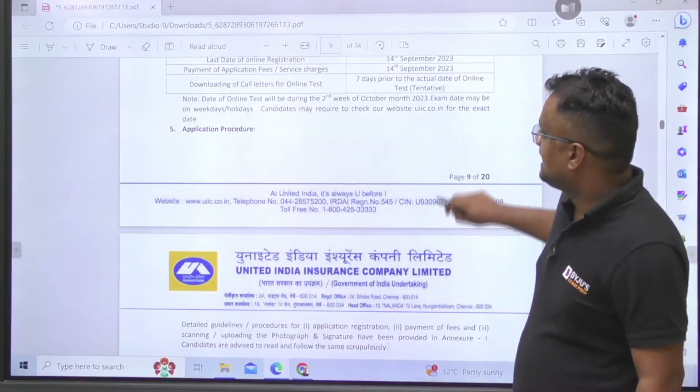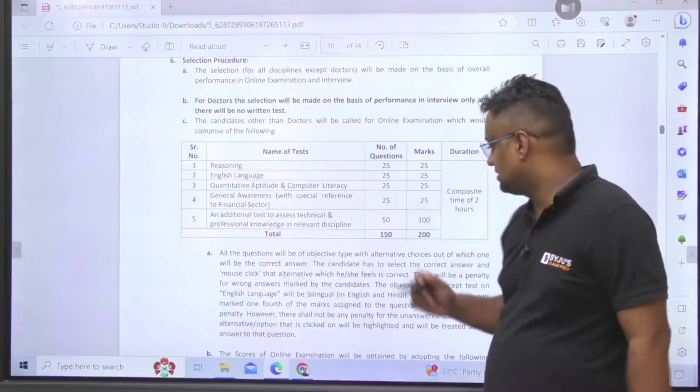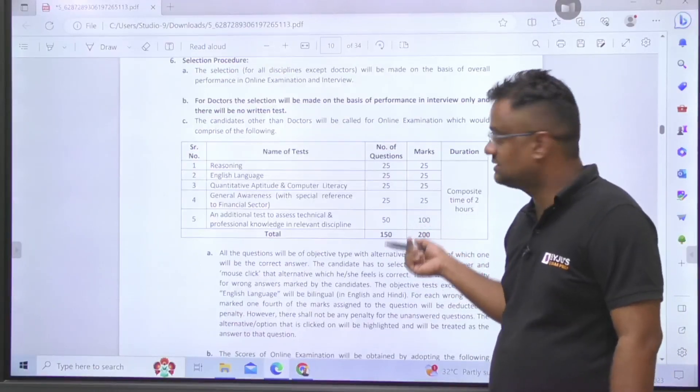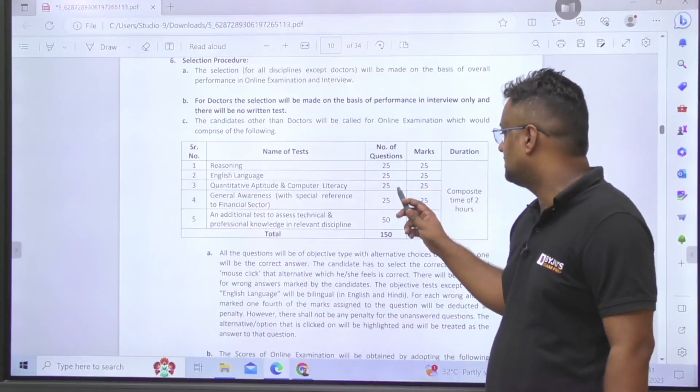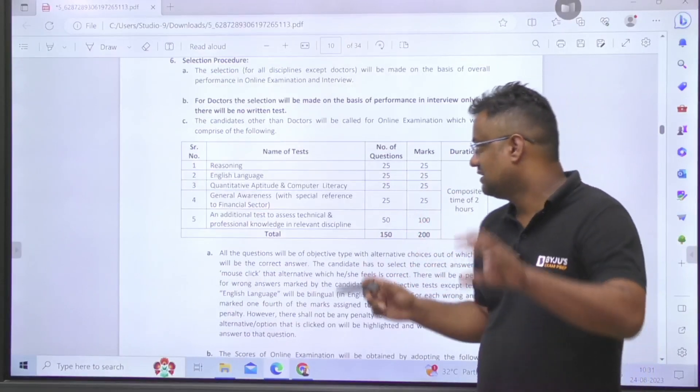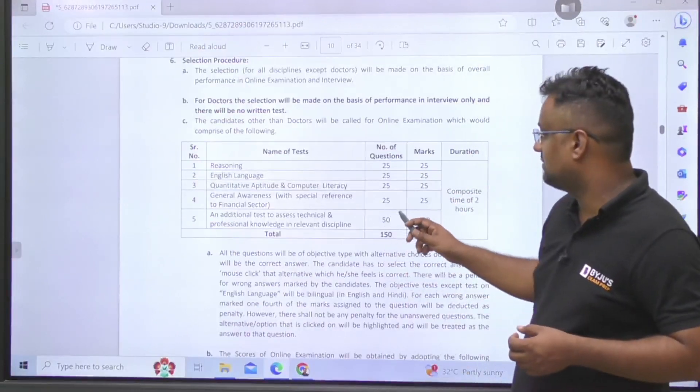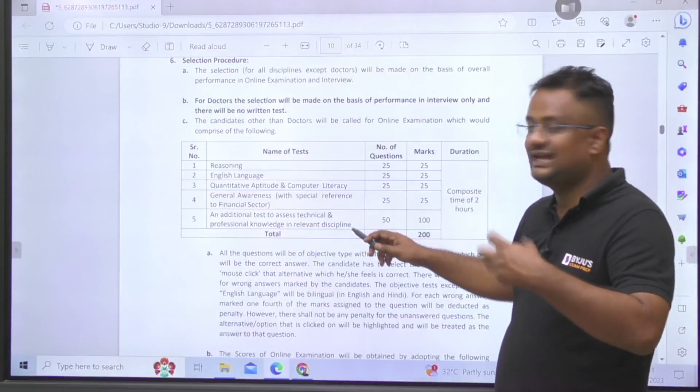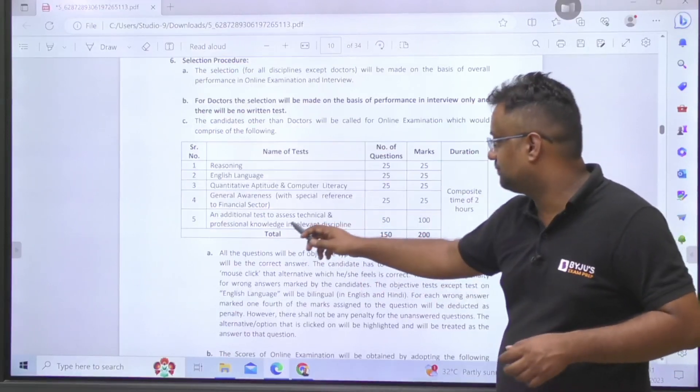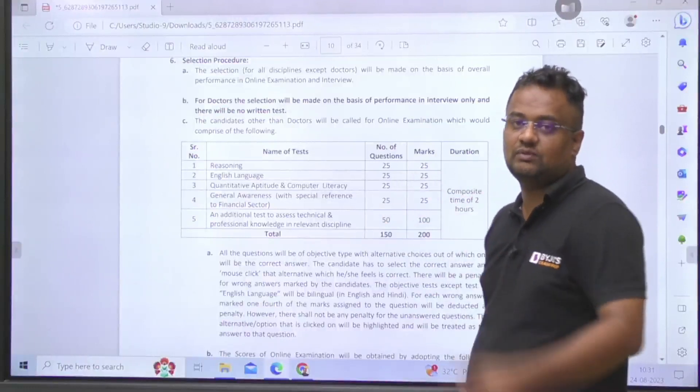About the written examination, there will be total 150 questions of 200 marks: 25 questions for reasoning, 25 for English, 25 questions aptitude, 25 questions general awareness with special reference of finance sector because this is an insurance company, and then about your area, that is for engineers, technical professional knowledge about relevant discipline. For civil it will be civil, for mechanical it will be mechanical.